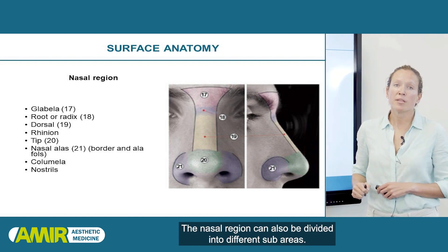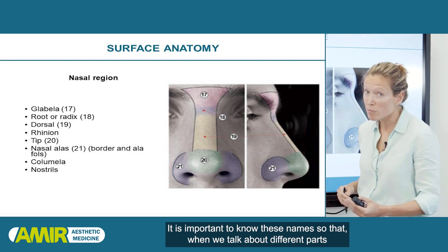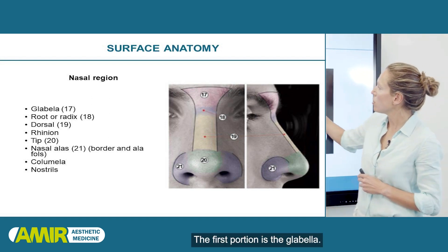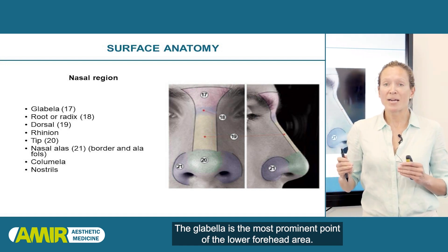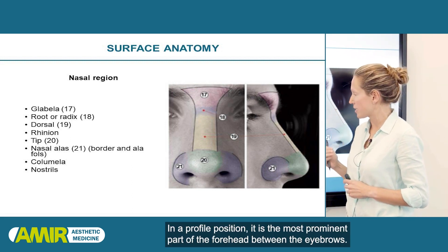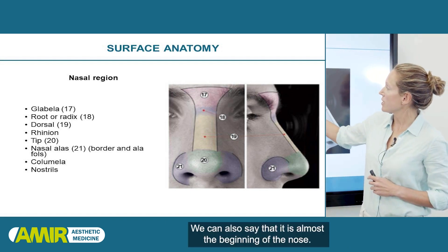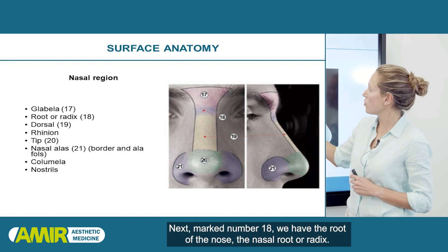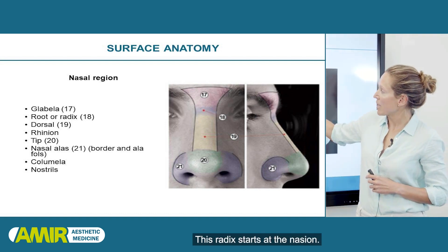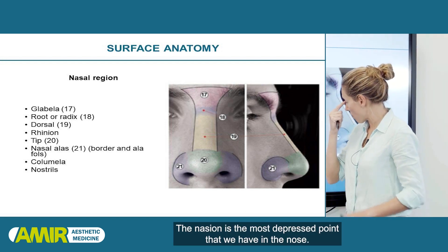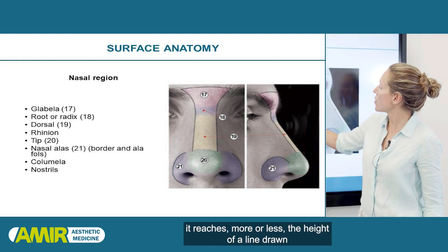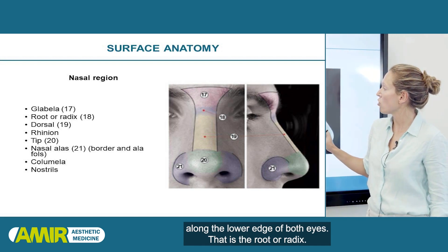The nasal region can also be divided into different sub-areas. It is important to know these names so that when we talk about different parts in aesthetic medicine, we know what we are talking about. The first portion is the glabella — the most prominent point of the lower forehead area. In a profile position, it is the most prominent part of the forehead between the eyebrows, and we can also say it is almost the beginning of the nose. Next, marked number 18, we have the root of the nose, the nasal root or radix. This radix starts at the nasion, the most depressed point of the nose, which in a lateral view reaches roughly the height of a line drawn along the lower edge of both eyes.